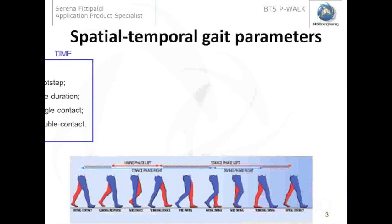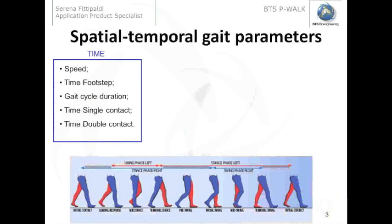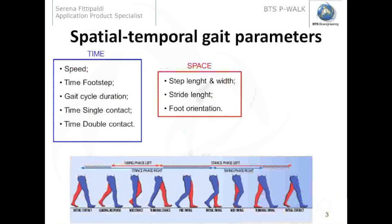Then we have the spatial-temporal gait parameters. We have parameters evaluating the timing during walking. For example, we have the speed, the time of footstep, the gait cycle duration, and the time of single and double contact on the floor.